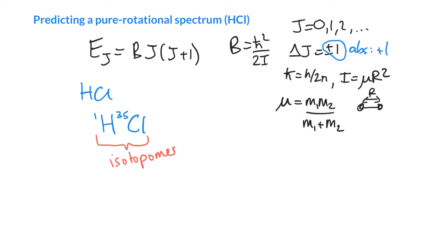We need the bond length. Sometimes we can calculate it from this information, but since we're predicting the spectrum, I'm just going to tell you what it is. It is 127.4 picometers, or 1.274 angstroms, or 0.1274 nanometers if you're an SI nerd.